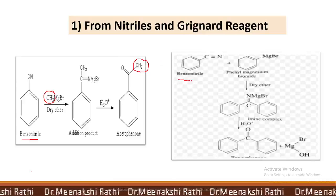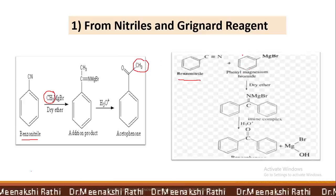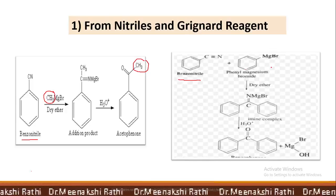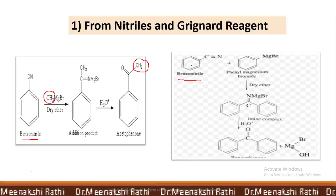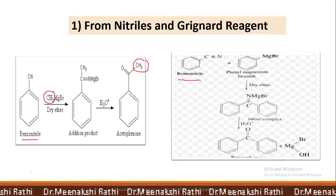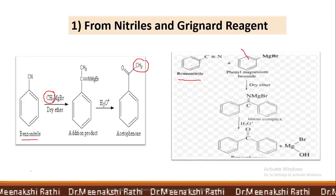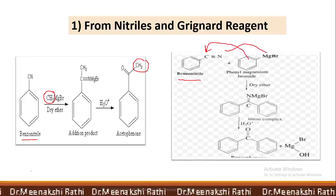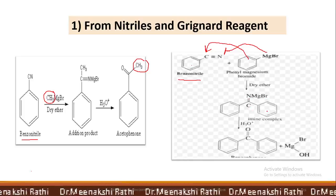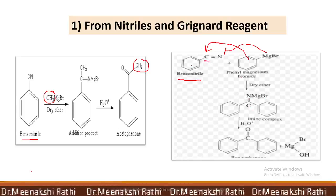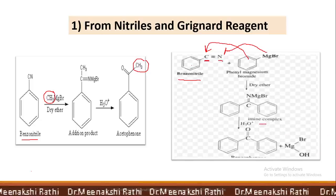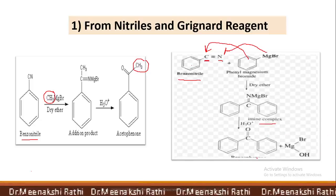Another example: benzonitrile reacts with phenyl magnesium bromide. The benzene ring remains as it is, the cyanide gets converted into C=O, and the R group (phenyl) attaches. In benzonitrile, the carbon and nitrogen are present; the phenyl group from the Grignard reagent goes to carbon and MgBr attaches to nitrogen, giving a complex where two benzene rings are attached to the carbon and MgBr to the nitrogen. This imine complex on hydrolysis gives benzophenone — a ketone.